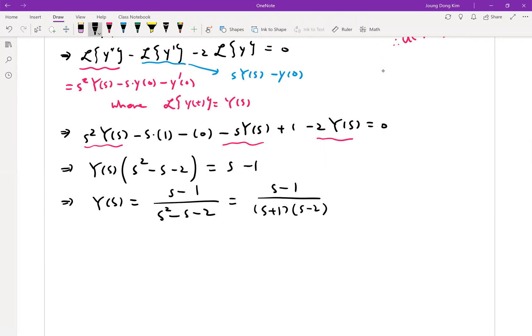Then your y s can be written by s minus one over s plus one and s minus two. Then do the partial fraction. But that's really easy. We can set that equal to a over s plus one plus b over s minus two. Let me skip this part. Then anyway, by the partial fraction you will get one third over s minus two. So let me change the order for writing is two third over s plus one and plus one third over s minus two.